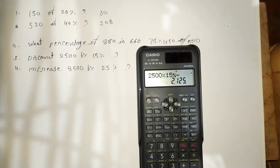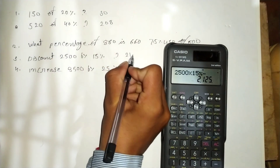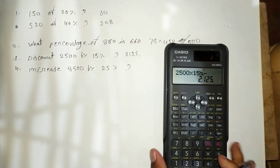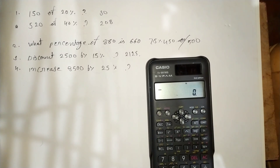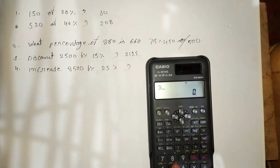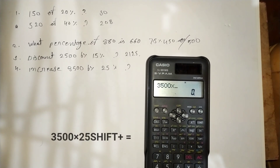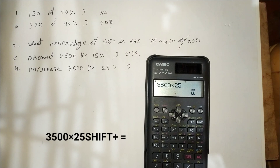Because it's a discount — minus 15 percent of the product price — we get 2125. Next question: increase 3500 by 25 percent. Suppose any product is priced at 3500 and the price increases by 25 percent. Press 3500 multiplied by 25, then press Shift and Equals.